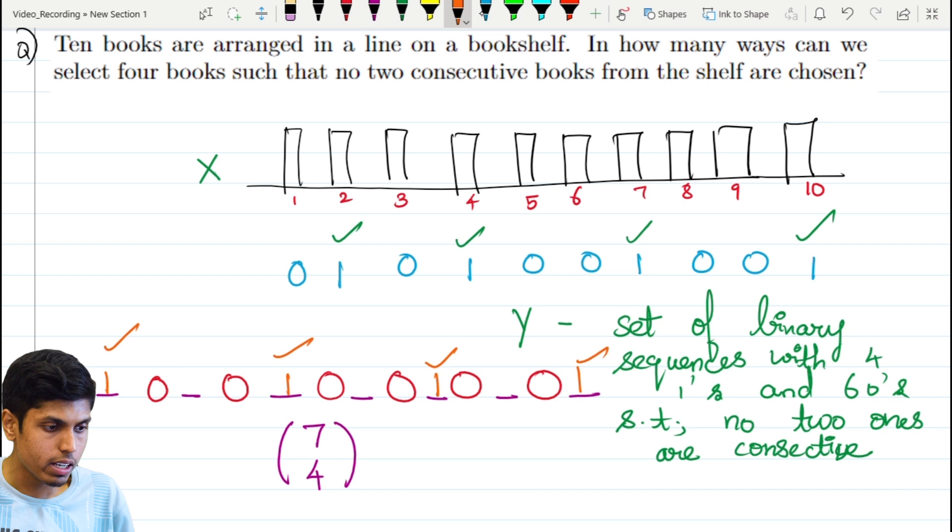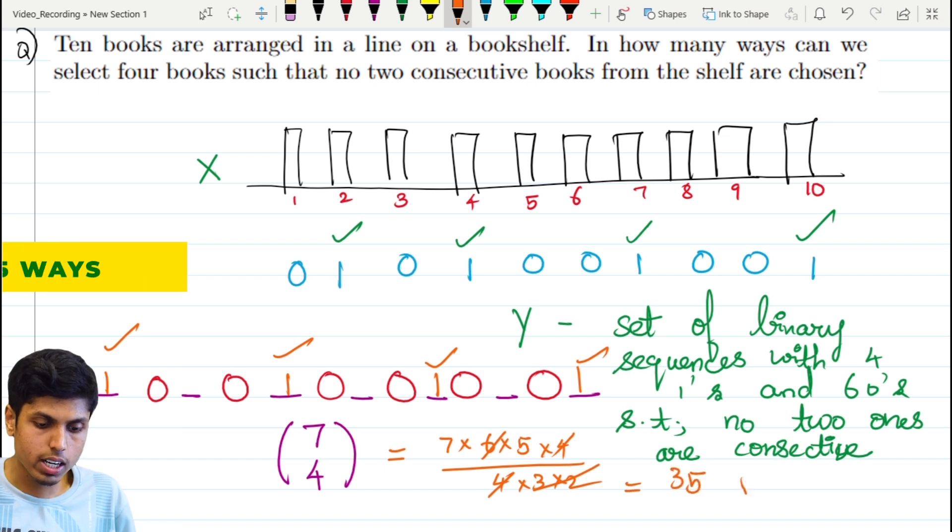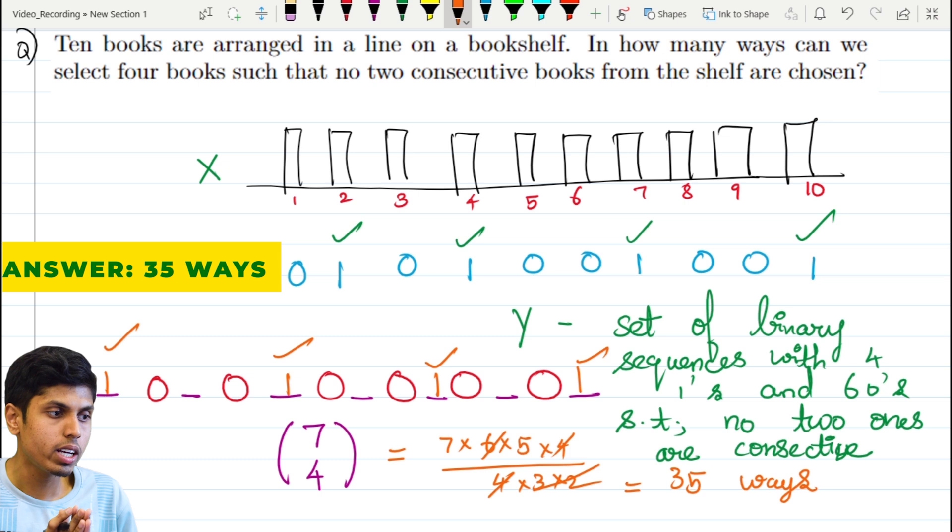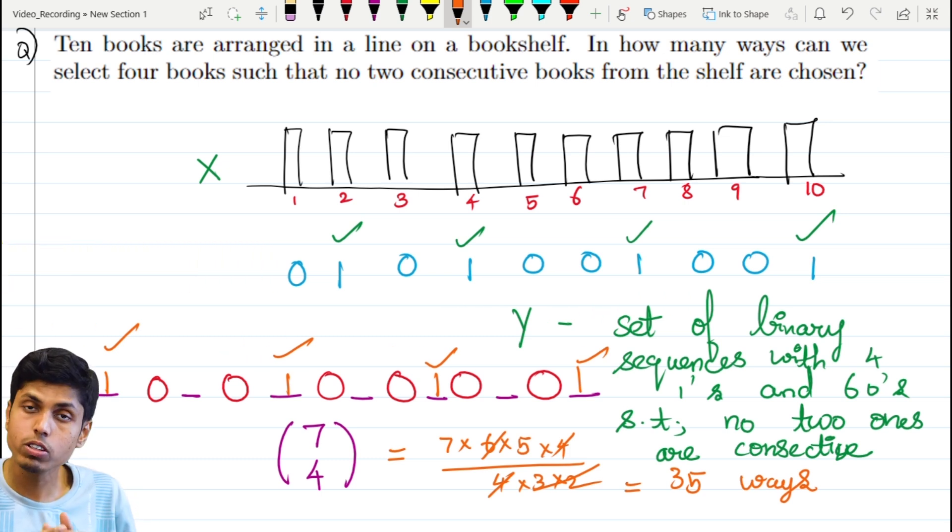So 7 choose 4 ways, which is 7 times 6 times 5 times 4 divided by 4 times 3 times 2. After cancellation, this gives us 35 ways. That is, the cardinality of set Y is 35, which means the number of ways to choose the books so that they are not consecutive is also 35.